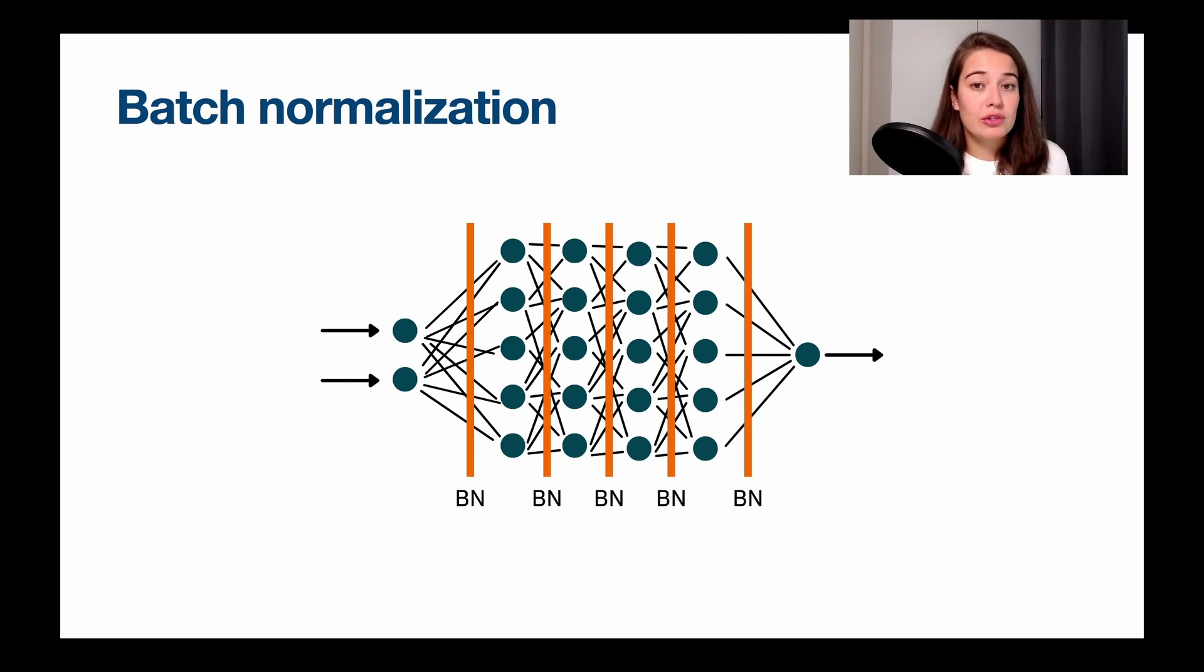So researchers came out with this solution, which is called batch normalization. And what we do is we don't only normalize our input, but we normalize everything that comes out of any layer before it goes into the next layer.